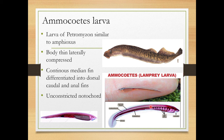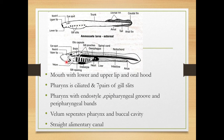It comes under Cephalochordata-vertebrata, so the notochord is replaced by the vertebral column, but in the larvae the notochord still persists. Other characters include a mouth with lower and upper lips, oral cirri are present, the pharynx is ciliated, and there are seven pairs of gill slits.